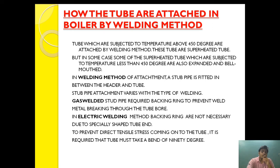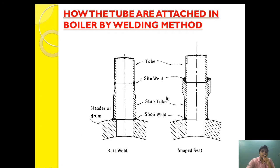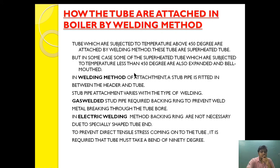In the welding method of attachment, a stub pipe is fitted between the header and the tube. The stub pipe attachment varies with the type of welding. As you can see in the diagram, this is the stub tube which is fitted between the header and the tube.